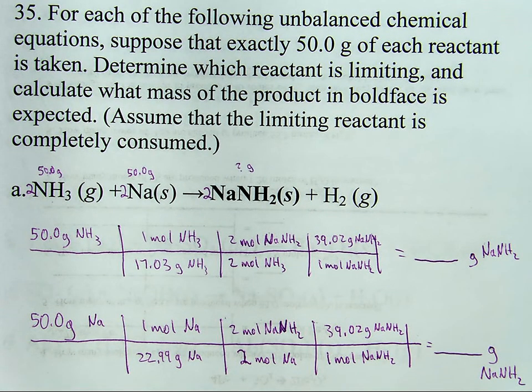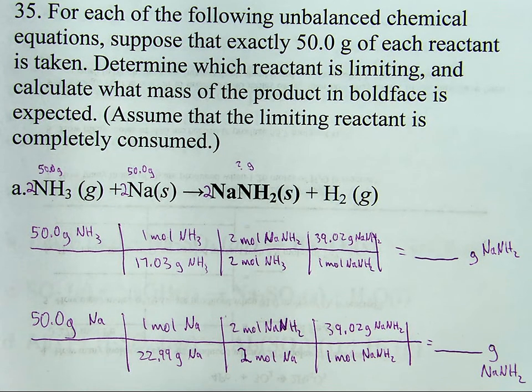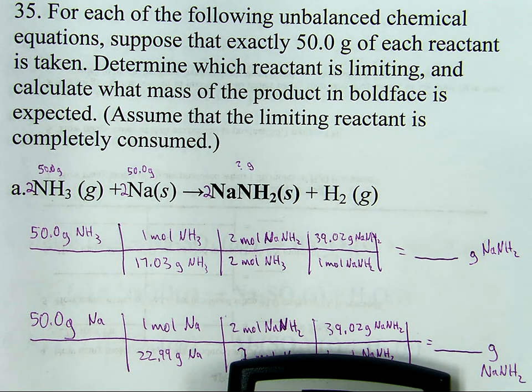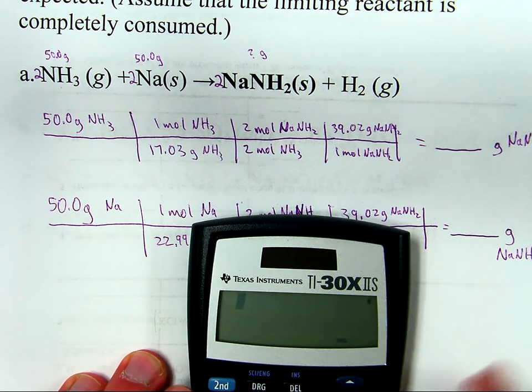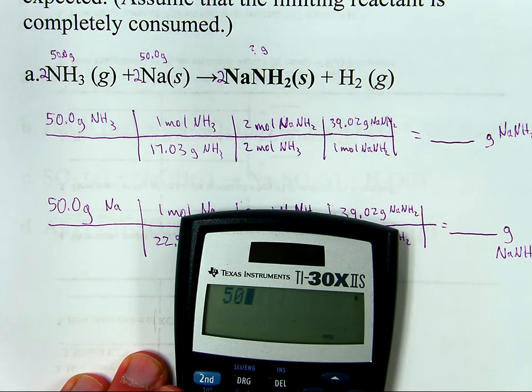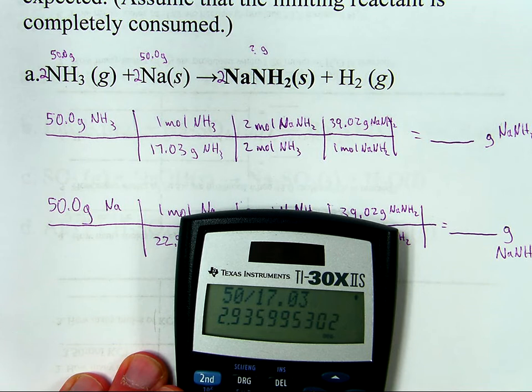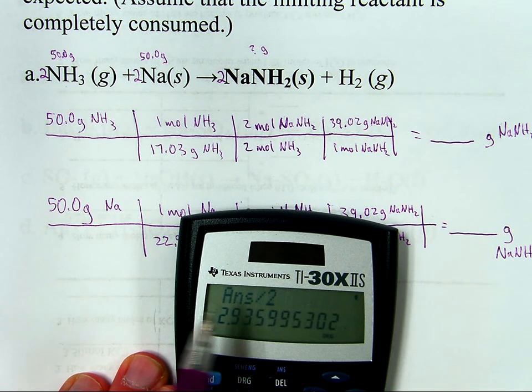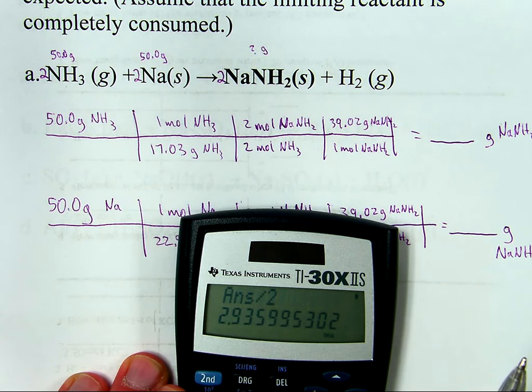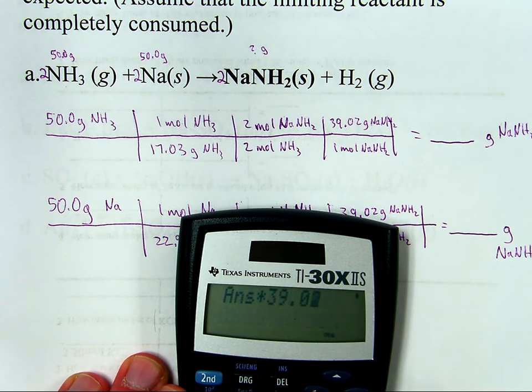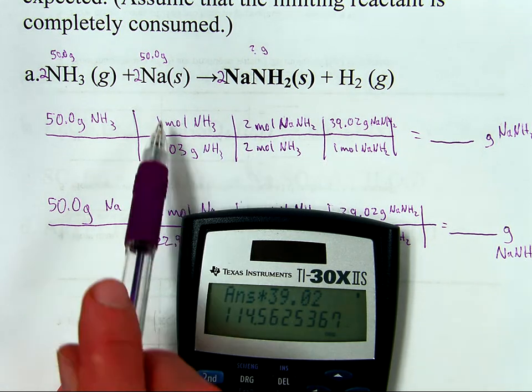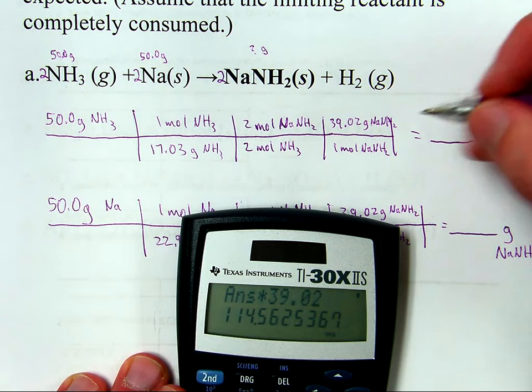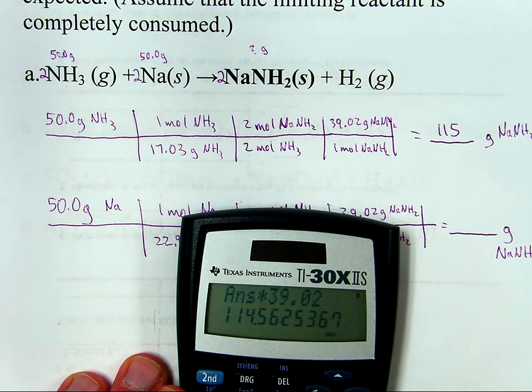Now I simply go through and calculate what it is that the mass is going to be. Let me scoot this out of the way so you can see the calculator at work. 50 divided by 17.03 times 2 divided by 2, I just did that for the sake of pointing out that you want to do everything if it looks obvious, and then times 39.02. That's the raw calculator output. 114.5625. Four sig figs, infinite sig figs, infinite sig figs, four sig figs, three sig figs. So I round to three significant figures, 115 grams of product.